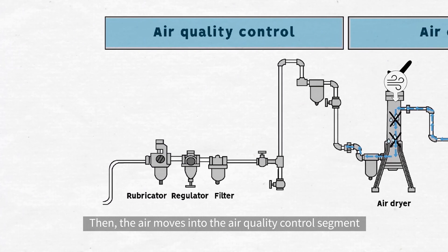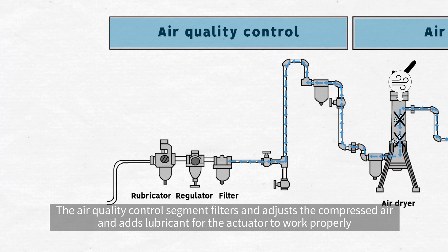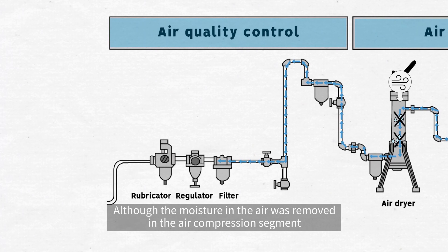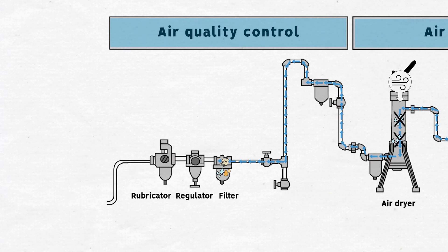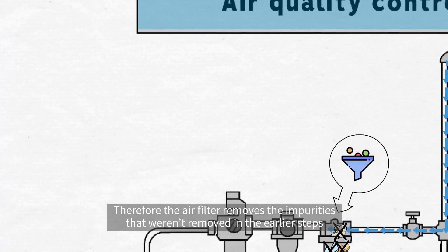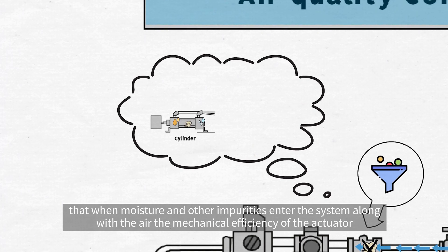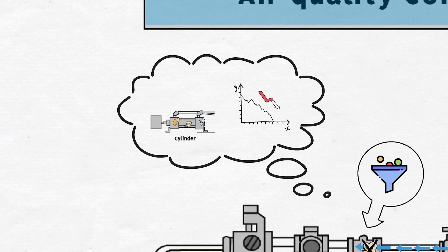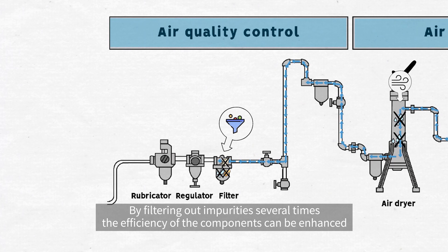Then, air moves into the air quality control segment. The air quality control segment filters and adjusts the compressed air and adds lubricant for the actuator to work properly. Although the moisture in the air was removed in the air compression segment, there still remain many impurities in the air such as oil, dust and residual moisture. Therefore, the air filter removes the impurities that weren't removed in the earlier steps. The reason impurities are continually removed is that when moisture and other impurities enter the system along with the air, the mechanical efficiency of the actuator and the lifetime of the machine will be reduced. By filtering out impurities several times, the efficiency of the components can be enhanced.